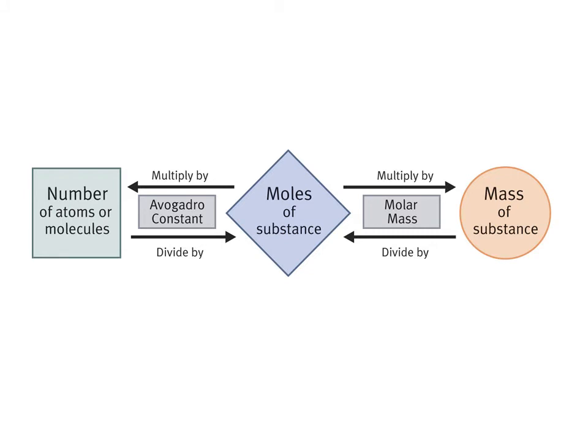So expressing this as a picture, if we put moles in the centre, if we want to go to the mass of the substance, we just multiply by its molar mass. If we want to go to how many atoms or molecules there are, we would multiply by Avogadro's number, the six by ten to the twenty-three. If you can remember this, you'll find all sorts of calculations very simple to do.